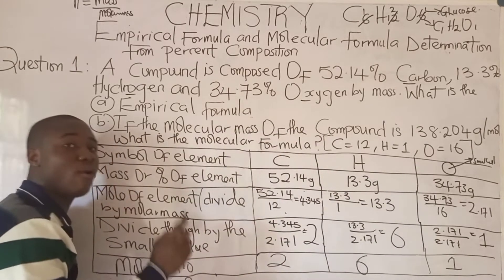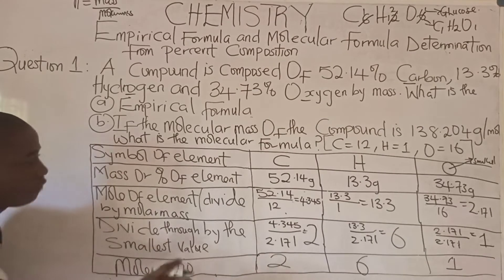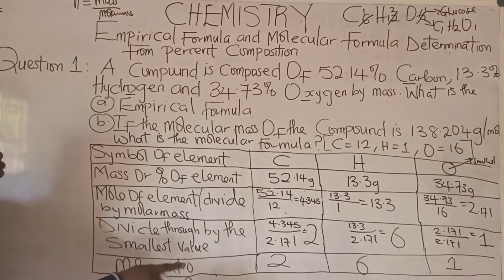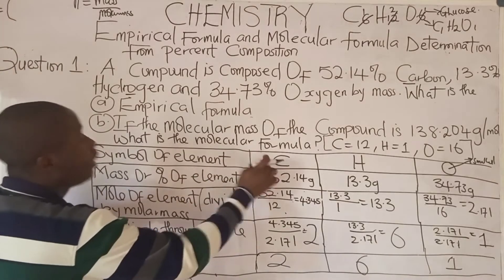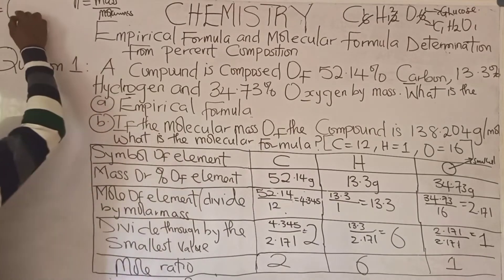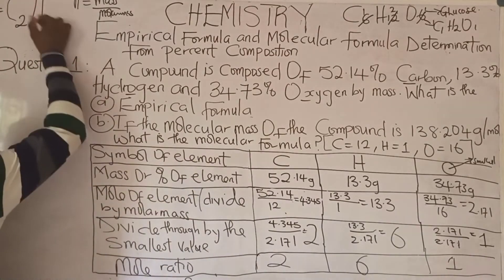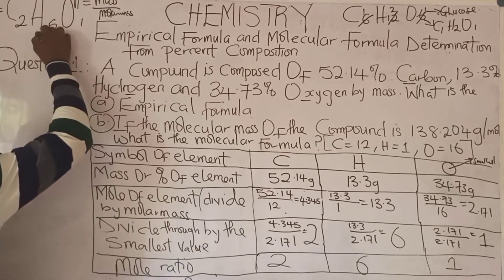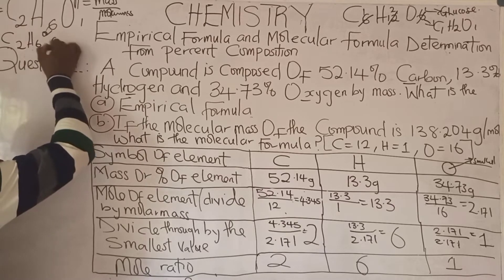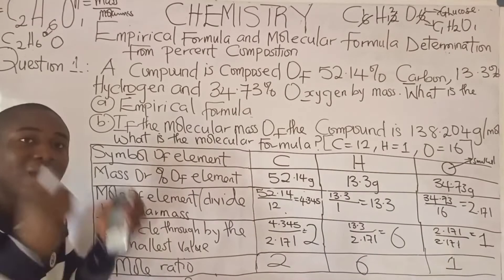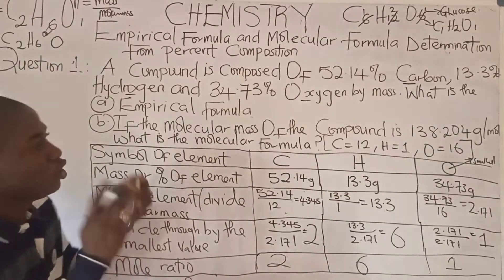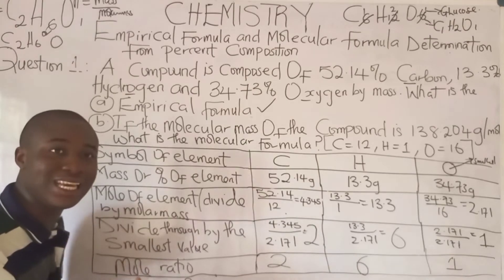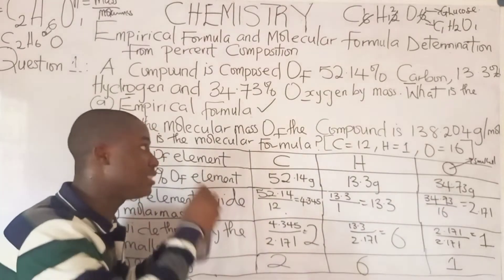What becomes the empirical formula of the compound? From our mole ratios: carbon's mole ratio is 2, hydrogen's mole ratio is 6, and oxygen's mole ratio is 1. So the empirical formula can be written as C2H6O. This is the empirical formula of the compound. We are now done calculating the empirical formula.